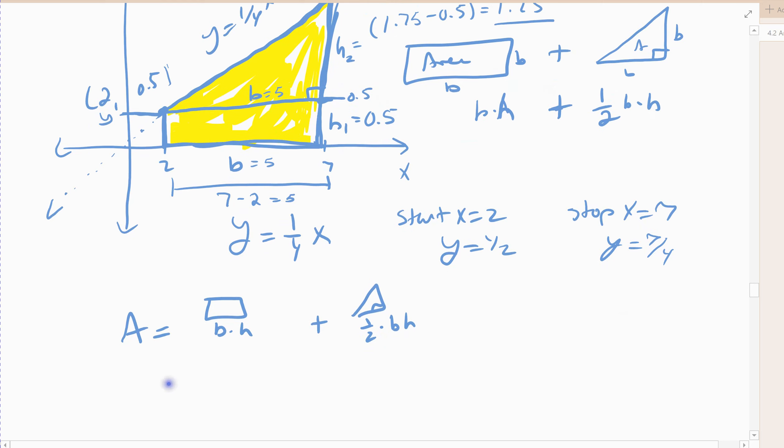All right, so the area of my rectangle is 5 times 1 half. The area of my triangle is 1 half, 5 times 1.25, right? The 5 is the base of both. The height of my rectangle is 1 half, and then remember the area of a triangle is the 1 half comes from the area formula.